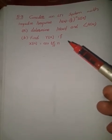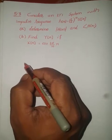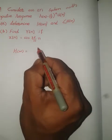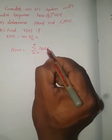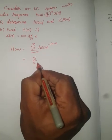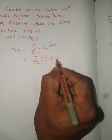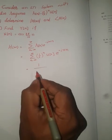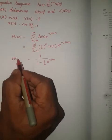We have to find H(Ω). As we know, H(Ω) is the Fourier transform of h[n]. So H(Ω) is equal to summation from n = -∞ to ∞ of h[n] e^{-jΩn}. This equals the summation of (1/2)^n u[n] e^{-jΩn}, and you get its Fourier transform as 1 divided by (1 - (1/2)e^{-jΩ}). This is H(Ω).